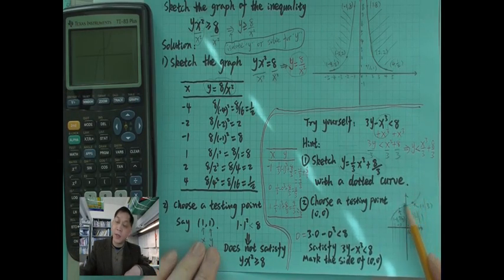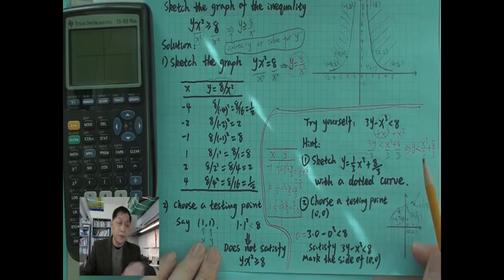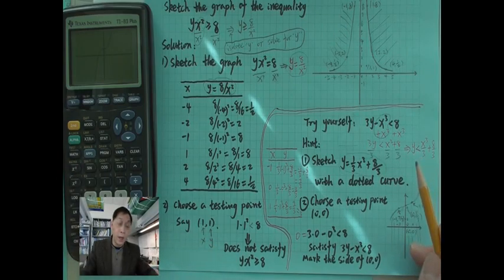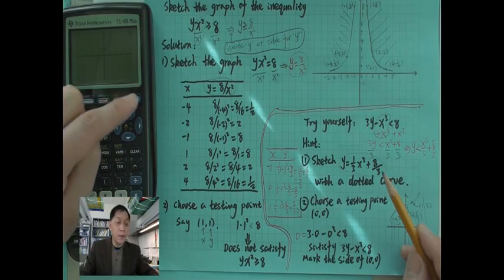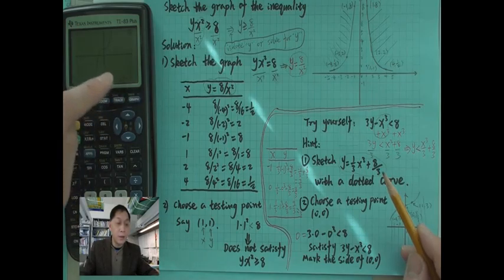That basically looks like that. If you don't have a TI-83 calculator, you can plug in values. So what you do is second table.